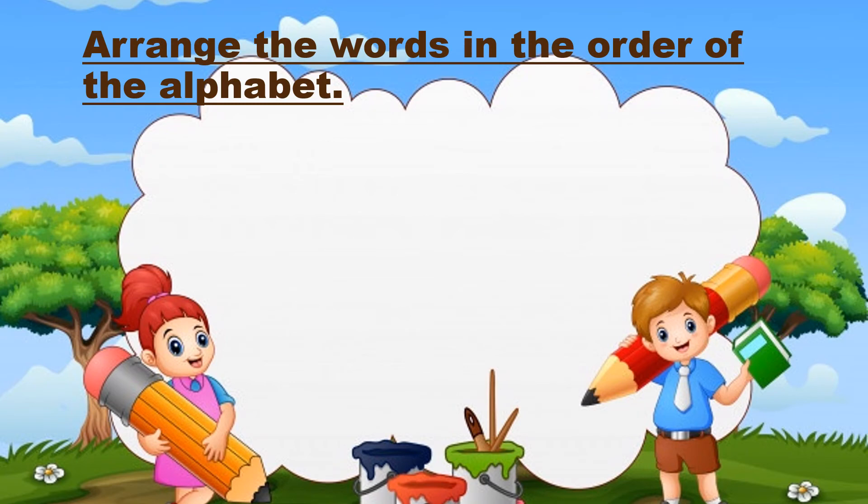Arrange the words in the order of the alphabet. Apple, Cat, Fish, Dog. So, in the order of the alphabet A comes first, so apple comes first. What is after A? After A is B. So, can you find any word starting from the letter B? No. So, what is the next letter? C. So, C is for cat. The next letter after C is D, so the next word is dog. And what is after dog? What is the letter after D? Is F. F is fish.